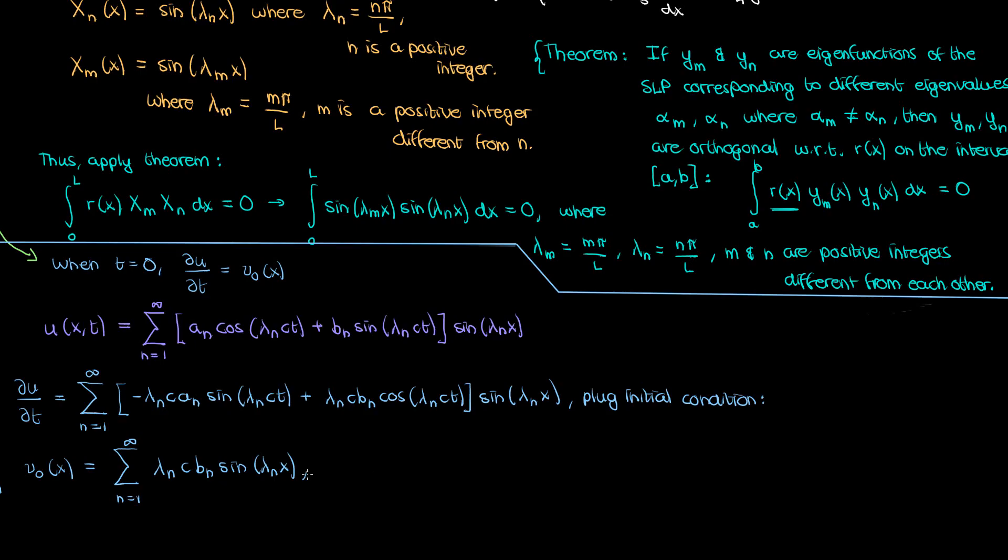To find b sub n we use the same trick we did to find a sub n with the orthogonality relation from Sturm-Lieuville. Multiply by sine of lambda sub m times x and integrate from 0 to L. Since the process is similar to what we did for a sub n I leave you guys to do the rest of the algebra and show that b sub n is given by the following integral.